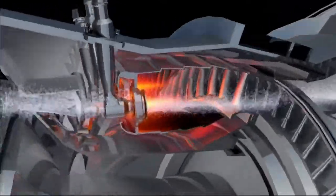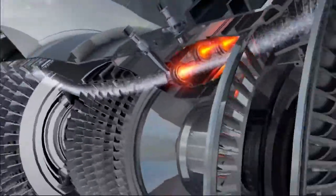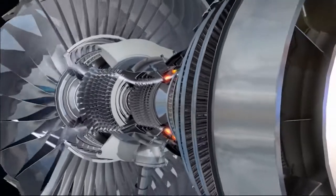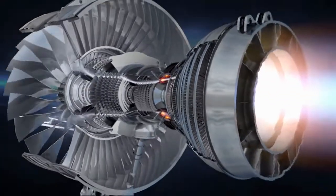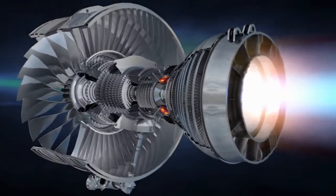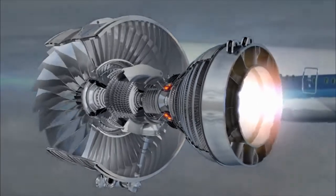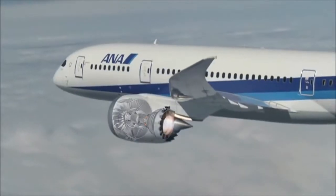In the combustion chamber, the air is mixed with fuel and ignited. The hot air explosion is directed towards the back of the engine, generating more thrust and rotating the turbines, which in turn are linked to the front fan and compressors.